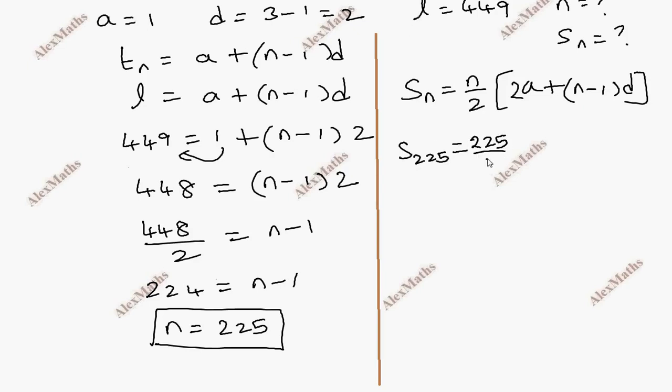So, Sn equals n by 2, 2a plus n minus 1 into d. That's 225 by 2, 2 plus 224 into 2.